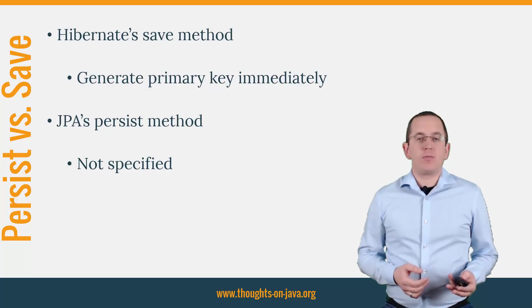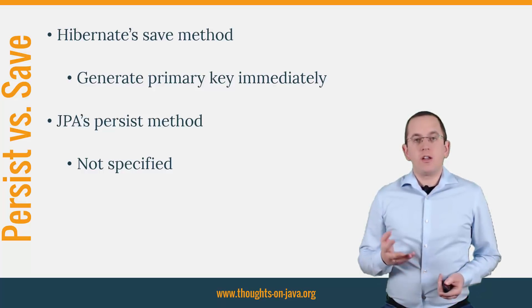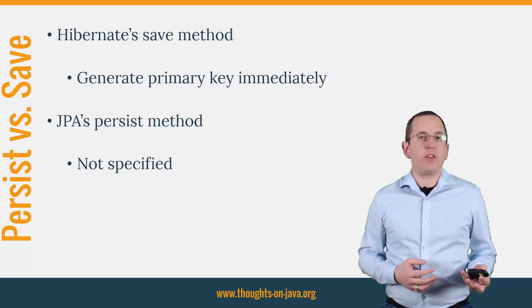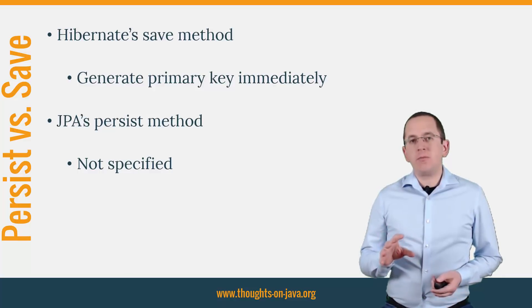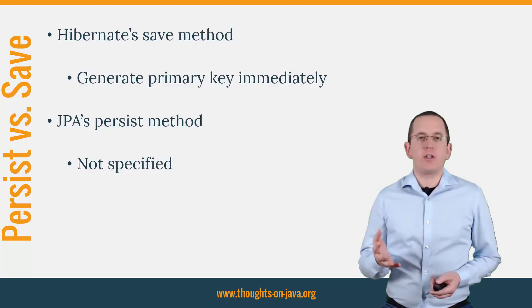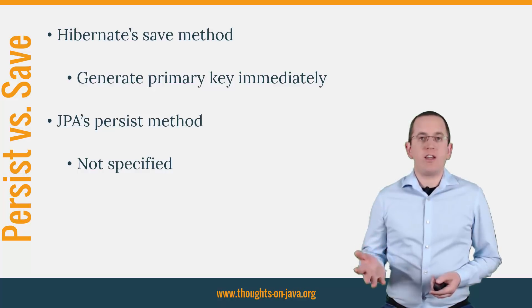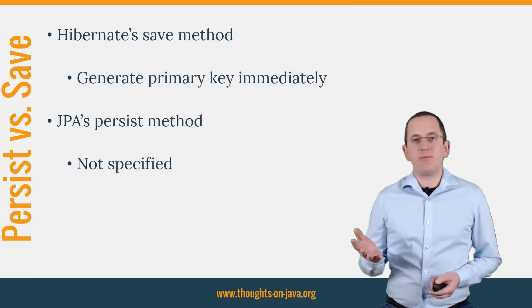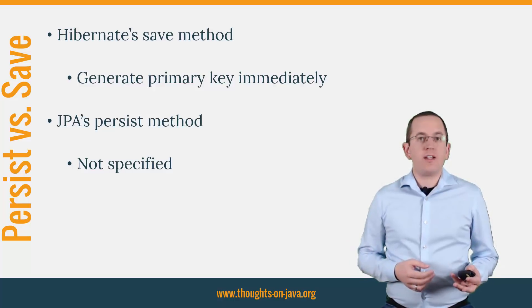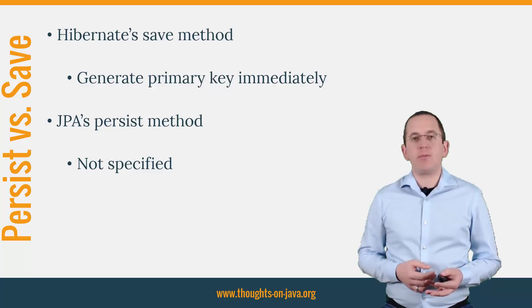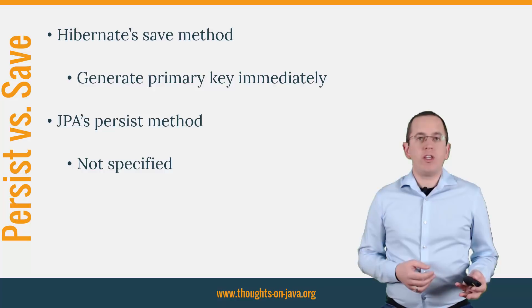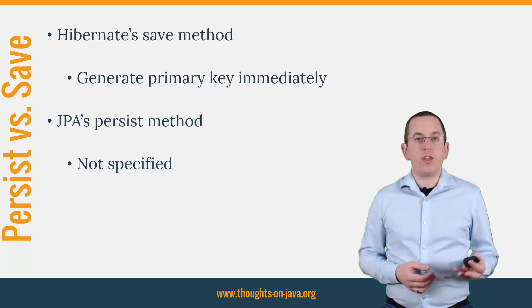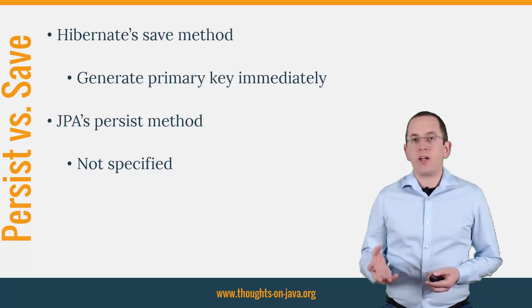Another obvious difference between these two methods is their return type. JPA's persist method returns void and Hibernate's save method returns the primary key of the entity. That might seem like a huge difference, especially when you take a closer look at Hibernate's javadoc and the JPA specification. The javadoc of Hibernate's save method states that it generates the primary key value first. But you don't find any information about this in the JPA specification. It doesn't define when the primary key value has to be assigned.